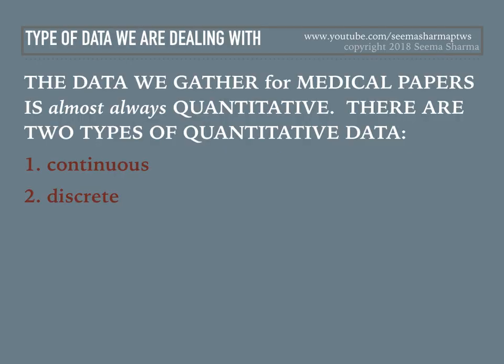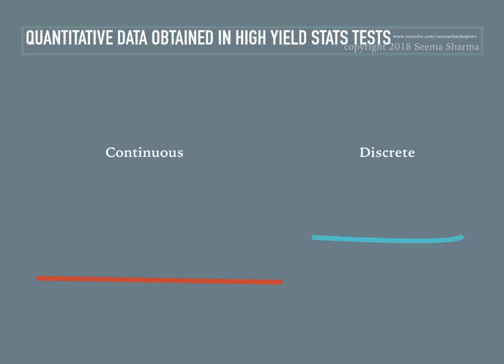The type of data that we gather for medical literature is almost always quantitative. There are two types of quantitative data: continuous data and discrete data. I'm going to split up the five high-yield statistical tests into whether continuous data or discrete data is obtained for them.